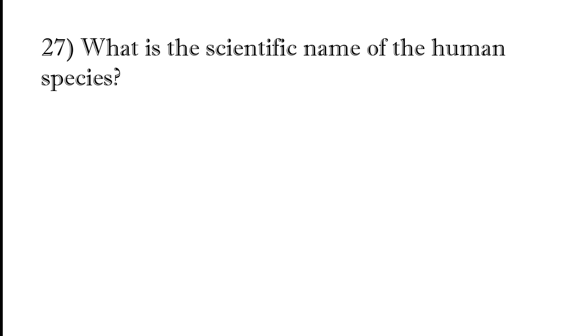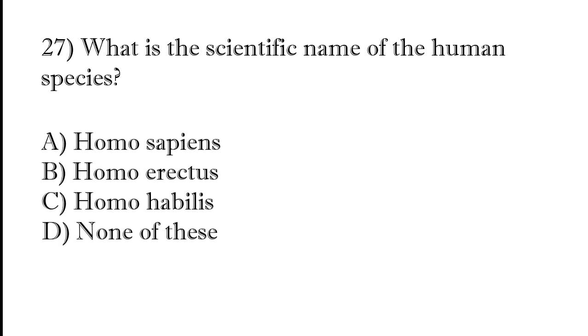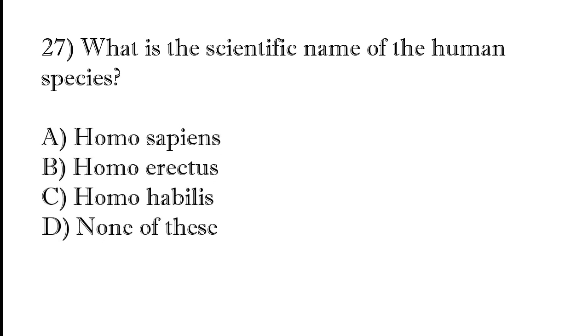What is the scientific name of the human species? Homo sapiens, Homo erectus, Homo habilis, or none of these. The correct answer is option A, Homo sapiens.